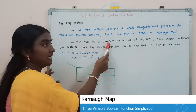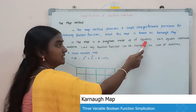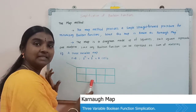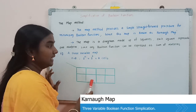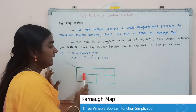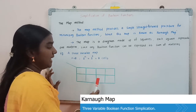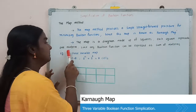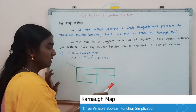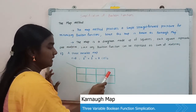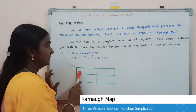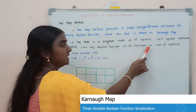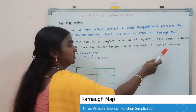The map is a diagram made up of squares. Here I am showing a three-variable Karnaugh map made up of squares, where each square represents one min term. Any boolean function can be expressed as a sum of min terms.